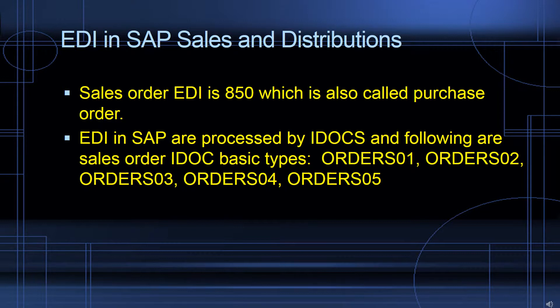If you can see them on the screen — ORDERS02 and ORDERS03 — these are different IDoc types that can be used to create, update, and change orders.